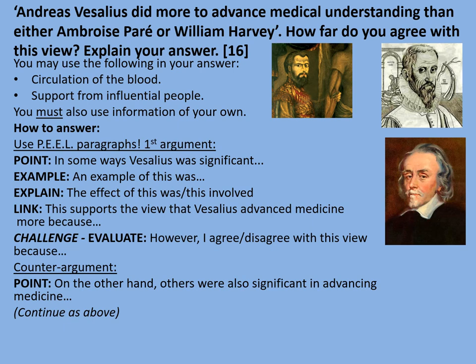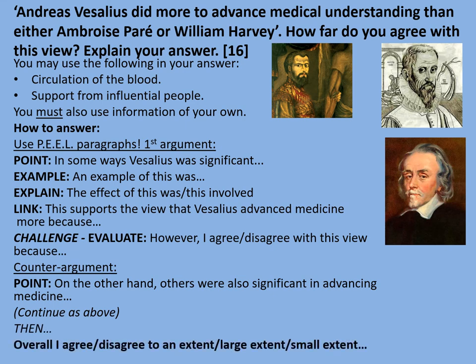You don't have to use these writing frames, but they may help if you struggle with structuring longer answers. Then lastly you need to conclude: 'Overall, I agree/disagree to a large/small extent...' and support that with examples already used, comparing these individuals in terms of who had the biggest or longest-lasting examples of progress. These answers are tricky — aim to spend about half an hour, including planning time. Write bullet-pointed notes of what you want to include and tick them off as you go. Don't cross out your plan — any plan written in the exam can still be marked.